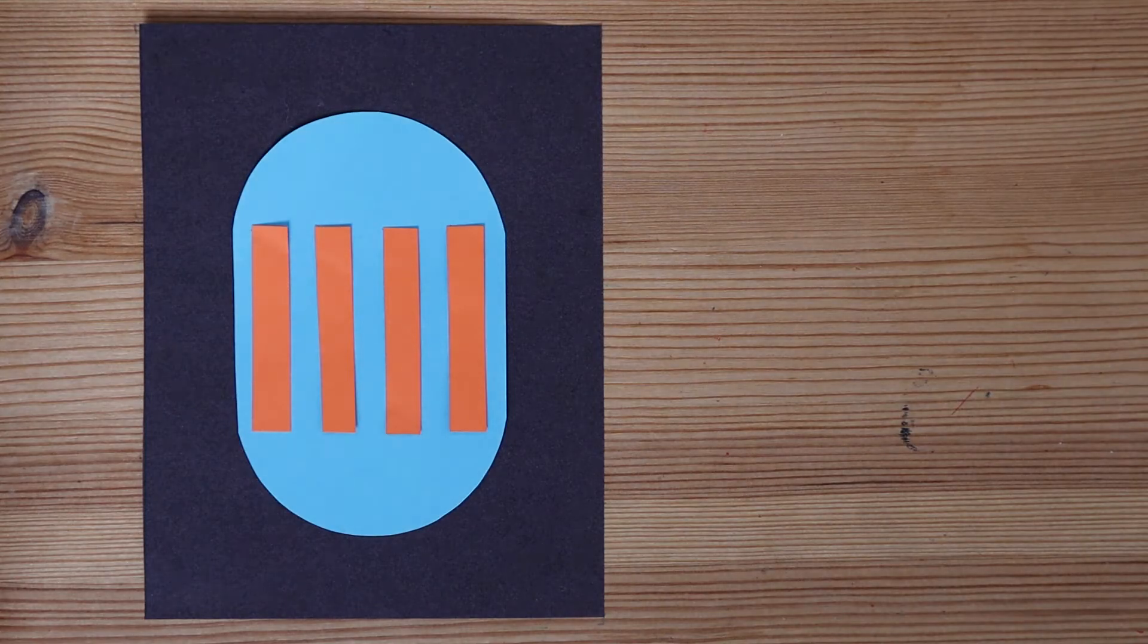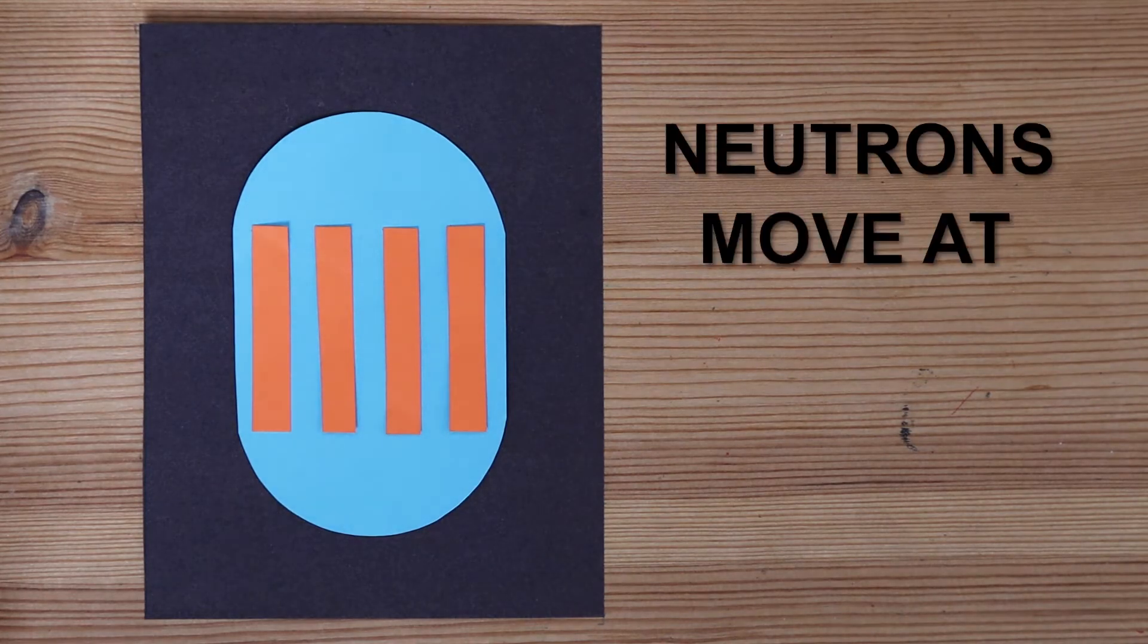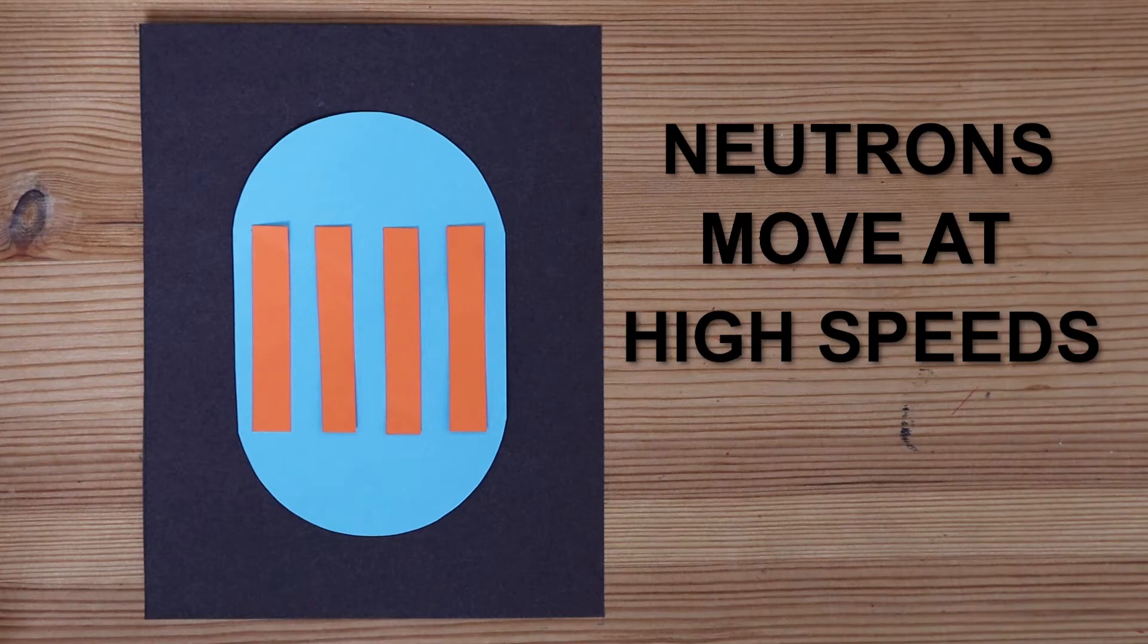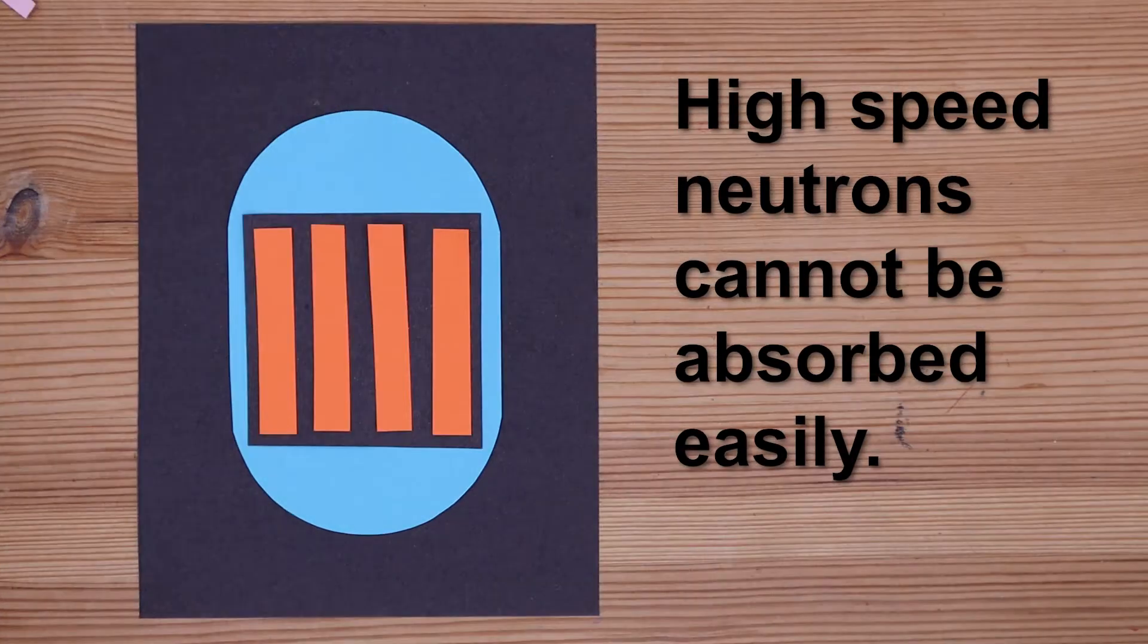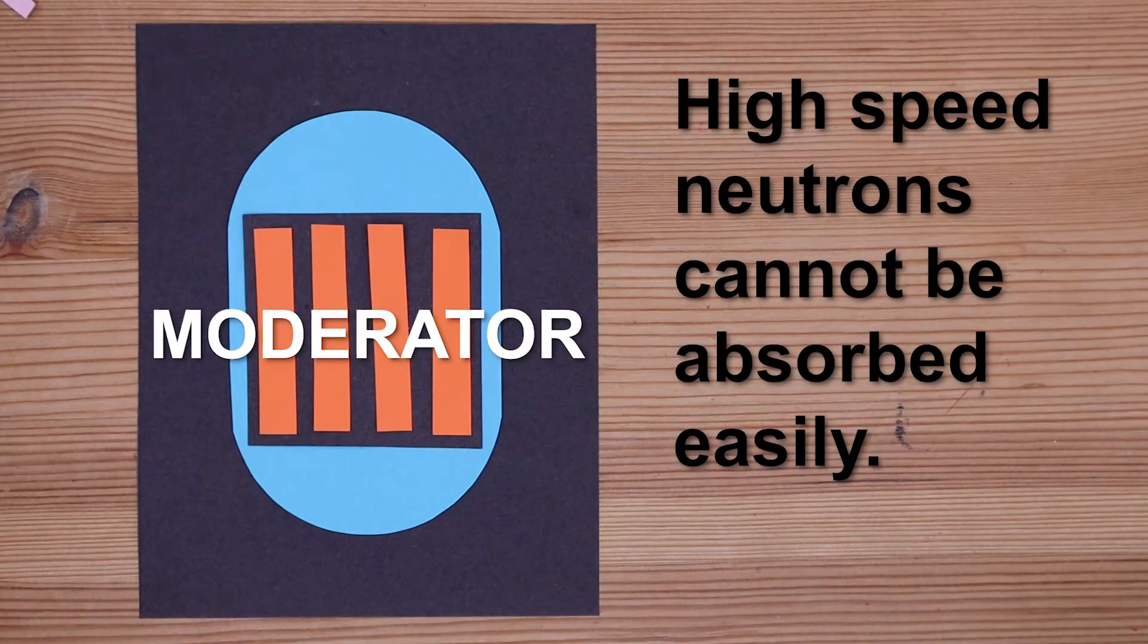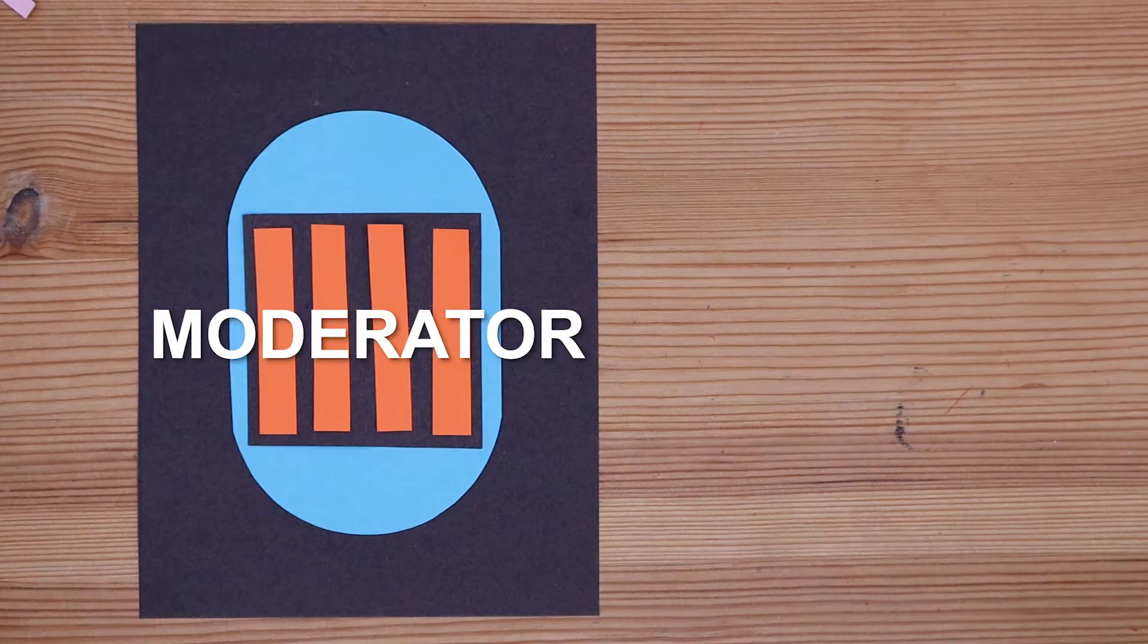But there's a slight problem. The neutrons released move around at very high speeds. This makes it difficult for them to be absorbed by a nearby fuel rod.